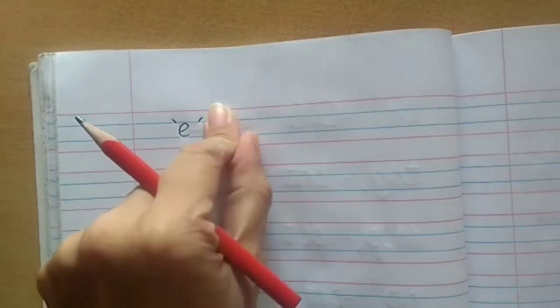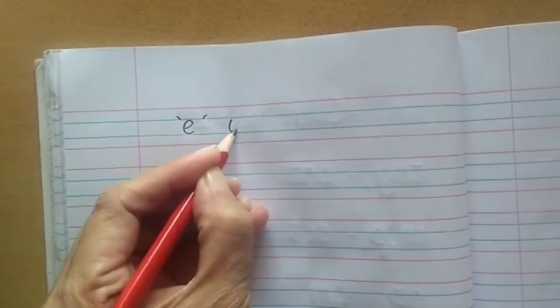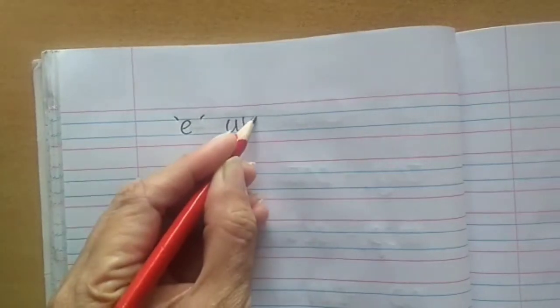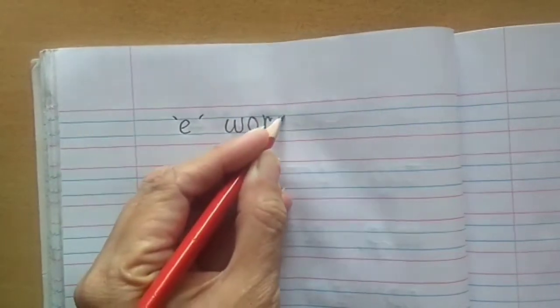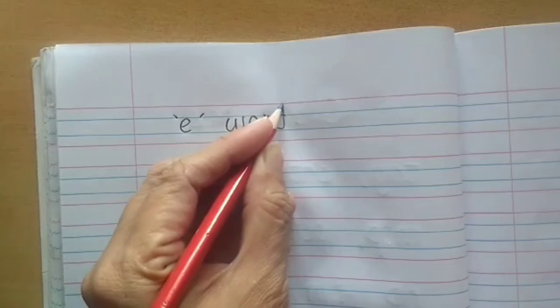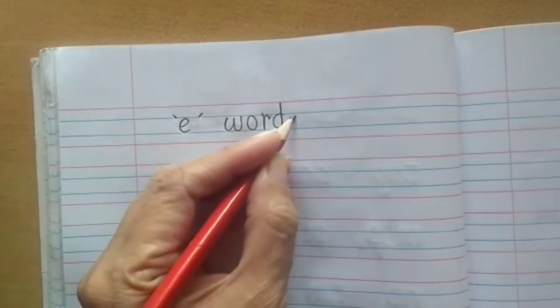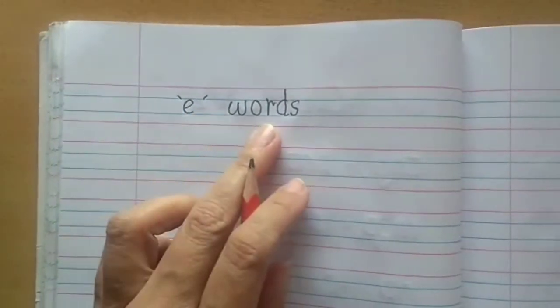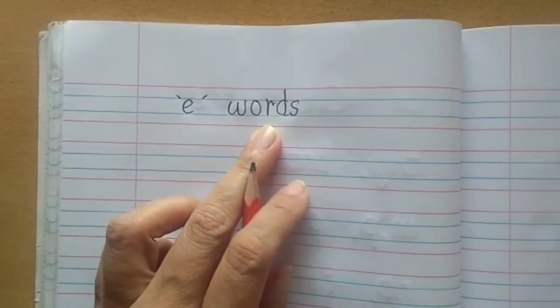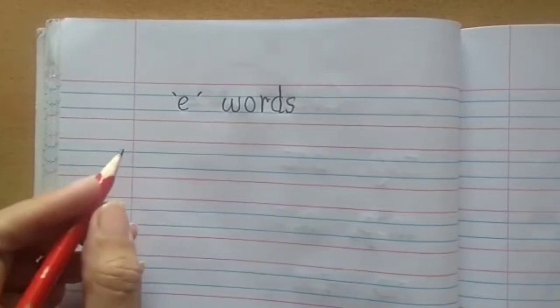Then we will write small 'e'. Then another slanting line, and after that we will leave one finger space. Put your index finger, and then from here we will write W-O-R-D-S. Words. So what we have written here? E words. Let us write the words now.